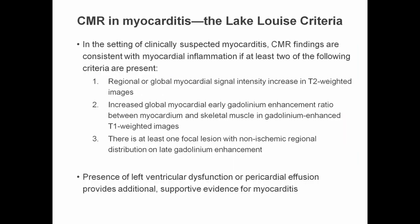So what are the Lake Louise criteria for the CMR diagnosis of myocarditis? If we have a patient who has clinically suspected myocarditis, the CMR findings are consistent with myocardial inflammation if at least two of the following criteria are present. Criterion one is evidence of a regional or global myocardial signal intensity increase in T2-weighted images. Criterion two is evidence of an increased global myocardial early gadolinium enhancement ratio between myocardium and skeletal muscle in gadolinium-enhanced T1-weighted images. Criterion three is that there is at least one focal lesion with non-ischemic regional distribution on late gadolinium enhancement.